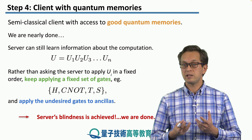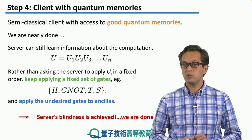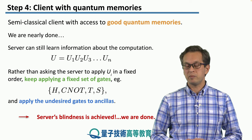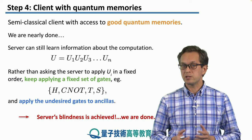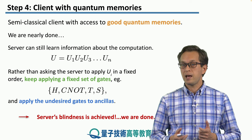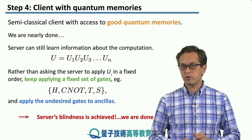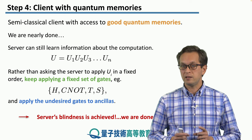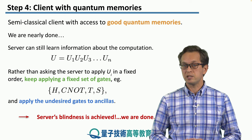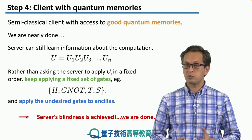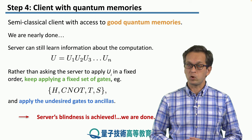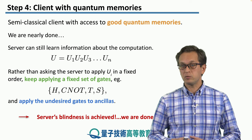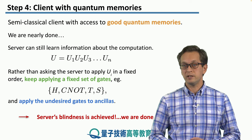This way, the server does not know what states it's receiving, and it also does not know what operations it is applying. This is the basic idea behind the semi-classical client which has access to good quantum memories and a one-time pad. But this protocol cannot guarantee the integrity of the data — it cannot check whether the server is being malicious or truthful and following the instructions from the client. In order to guarantee that, we have to work a little bit harder, and we will show you how to do that in the next lesson.